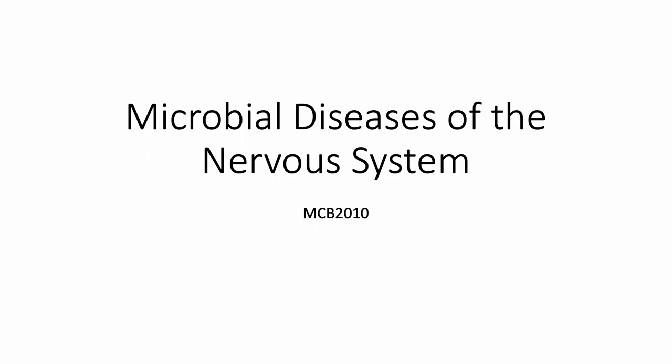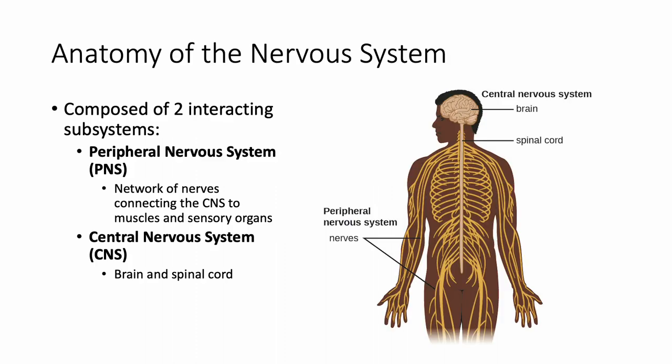This lecture will cover microbial diseases of the nervous system. First, let's talk about the anatomy of the nervous system. Our nervous system is composed of two interacting subsystems: the peripheral nervous system (PNS) and the central nervous system (CNS).